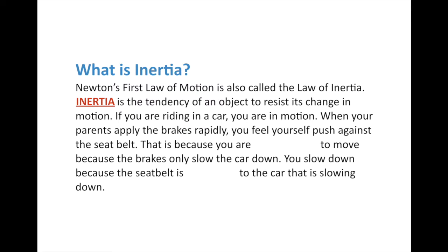Let's say you're riding in your car with your parents. When you're riding in the car, you're in motion. Your parents are following the speed limit at around 100 kilometers per hour — 55 miles per hour. Your parents apply the brakes rapidly because someone cuts in front of them. When they slam on the brakes, you feel yourself push against the seatbelt and go forward, but the seatbelt stops you. That's because the brakes are only slowing the car down — the brakes aren't slowing you down. You don't have brakes attached to you.